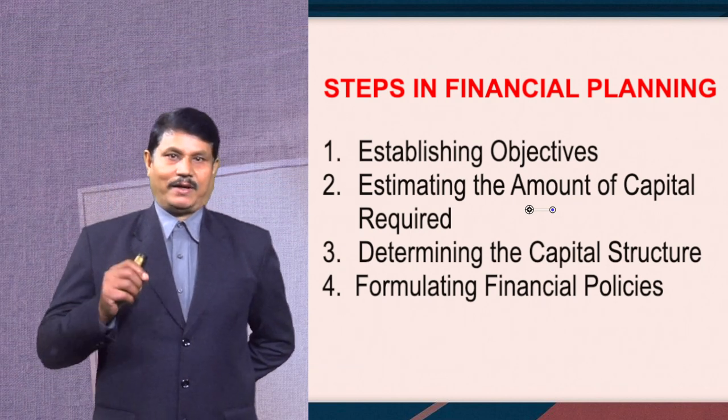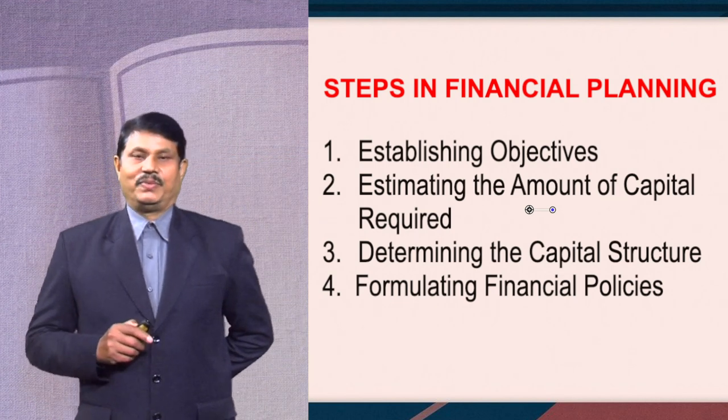The fourth step is determining the capital structure. The financial planner should determine the types of securities to be issued and the relative proportion of each type of security. It refers to the proportion of different kinds of securities raised by the firm as long-term finance. The fifth step is formulating financial policies. Financial policies involve procuring, administering, and distributing the funds of business firms. Financial policies of a business firm may be brought into various broad categories: policies governing the amount of capital required, policies which determine control by the parties who furnish the capital, policies which act as a guide in the use of debt or equity capital, policies which guide management in the selection of sources of funds, policies relating to payment of dividends, and policies which govern credit and collection activities.